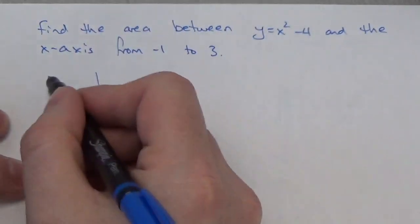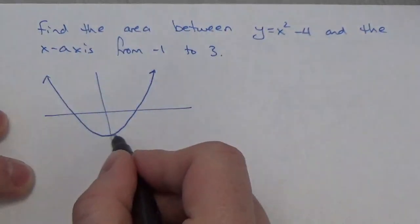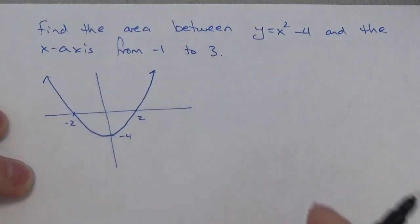So, x squared minus 4 is going to look something like that. Okay, where it's going to go down to negative 4, then we know it's going to go through the x-axis here at negative 2 and 2.